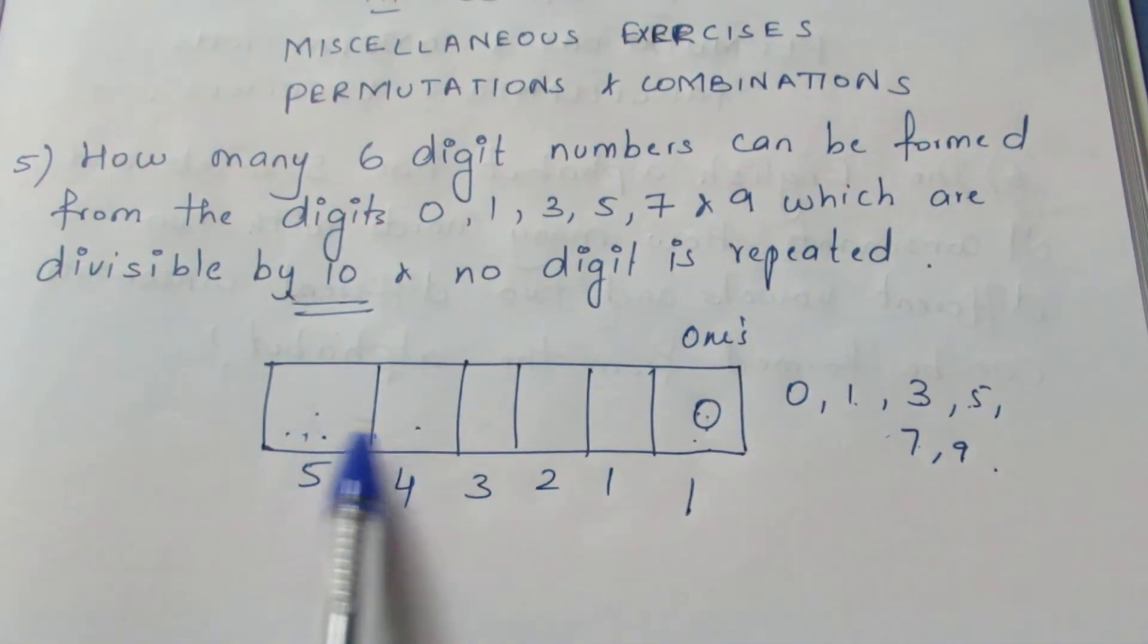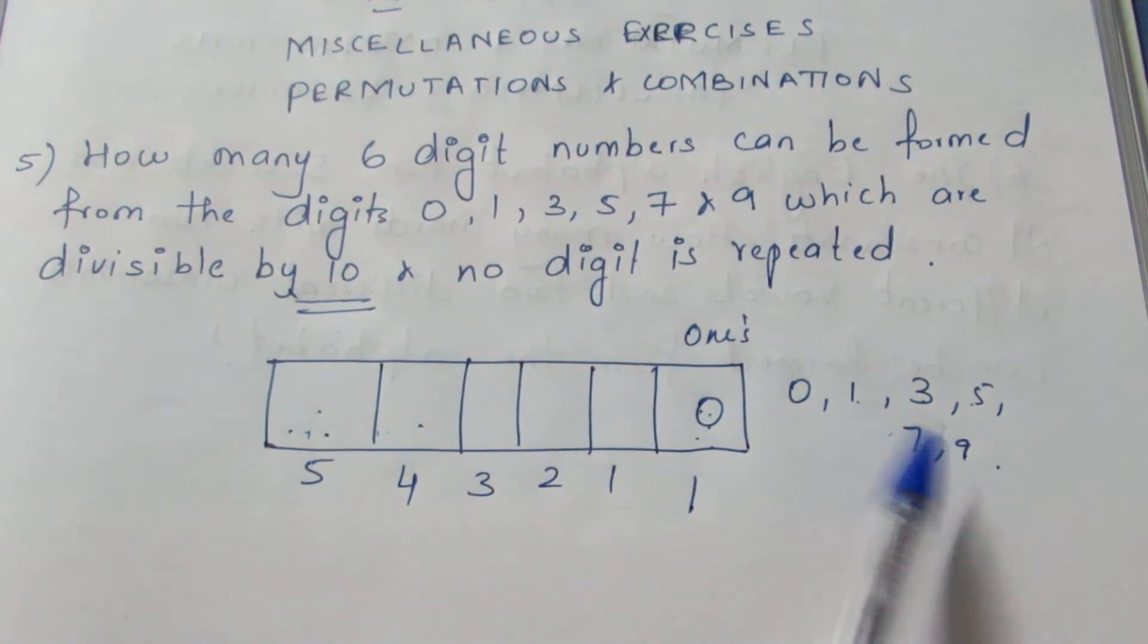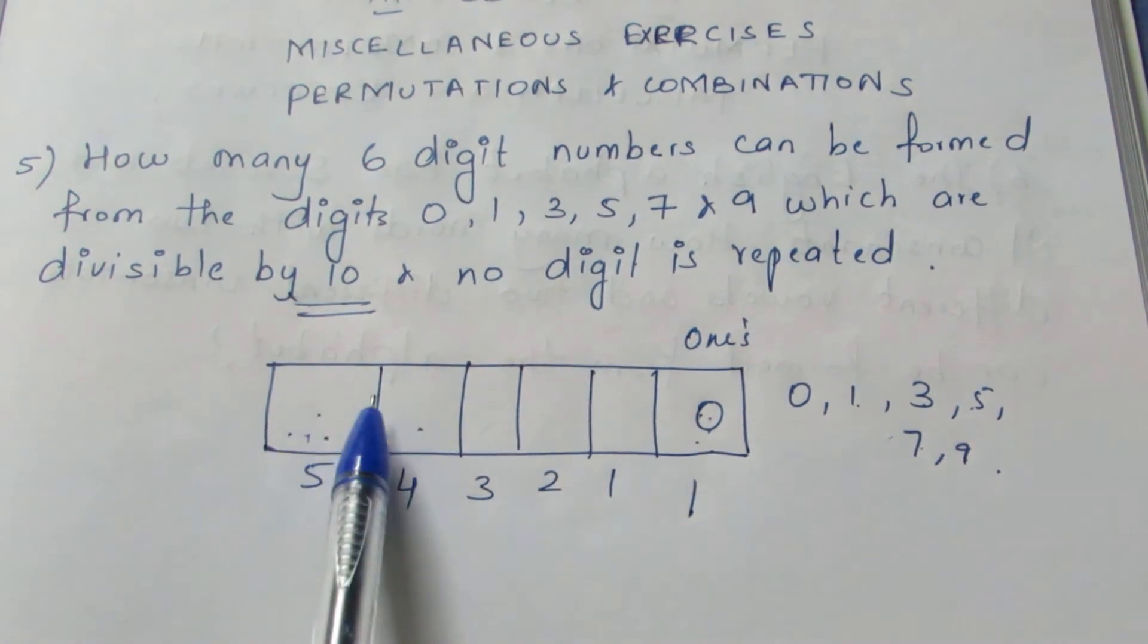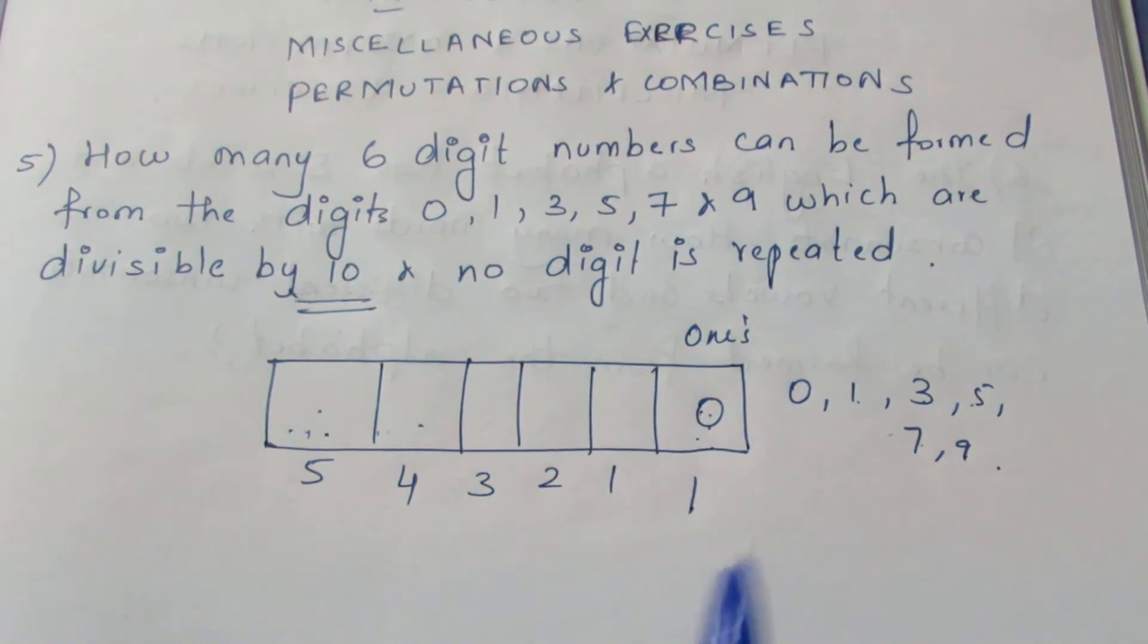Because we have already written 2 numbers here, the rest 3 numbers we can fill by any 3 now, any number in this. So again, we can fill it by 2 ways. Because we have already filled 4 numbers, we can fill it in 2 ways, 1 way.